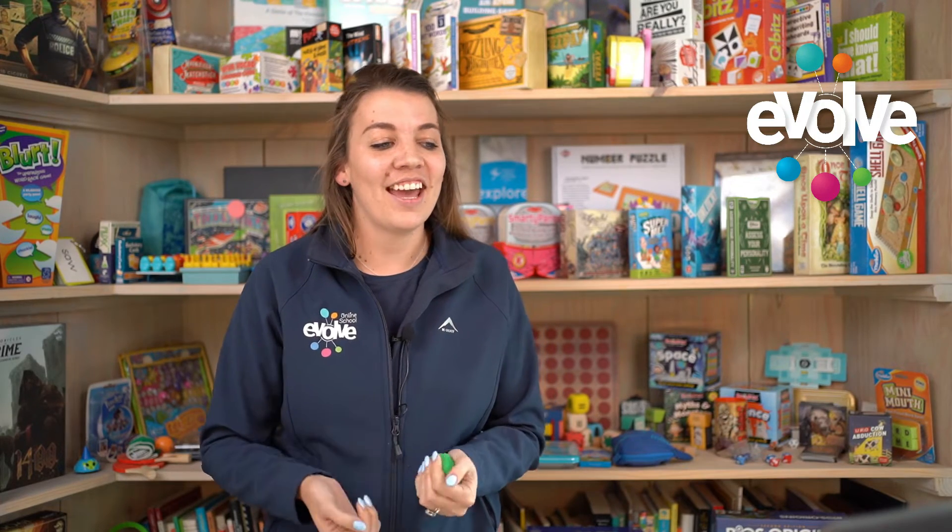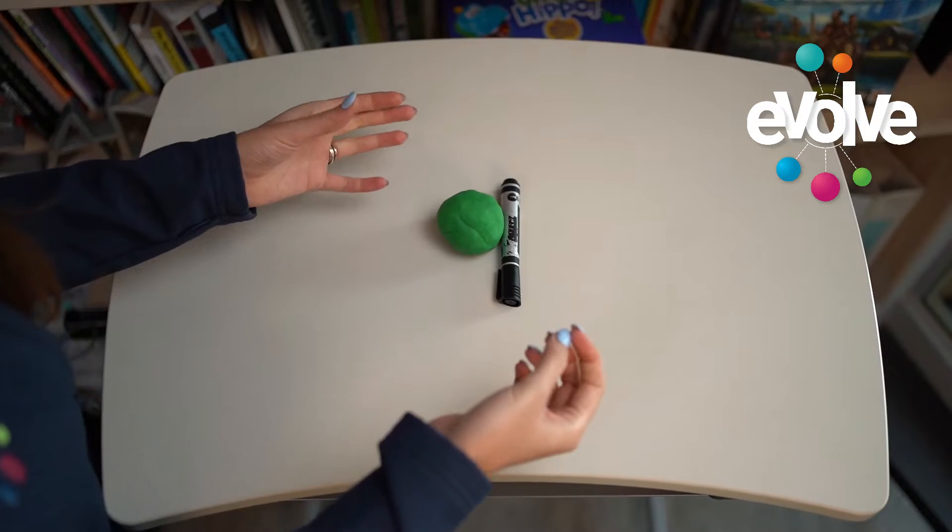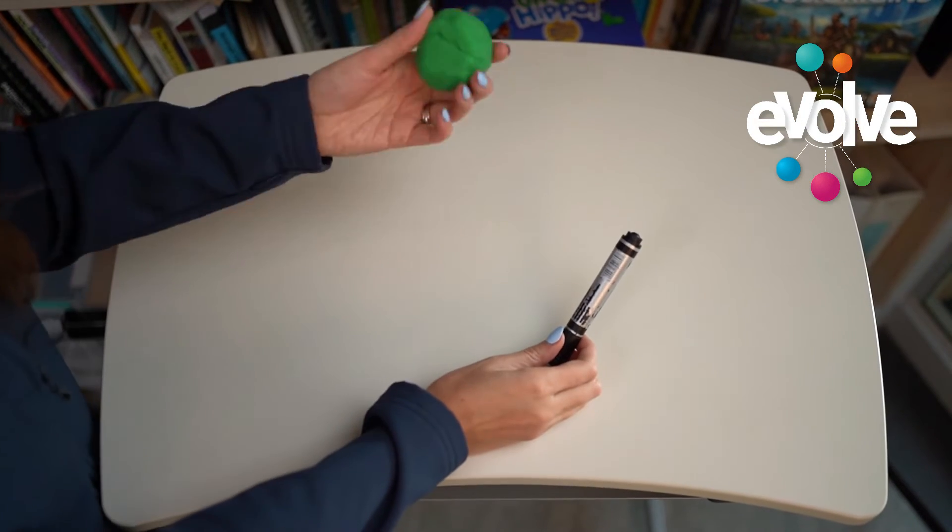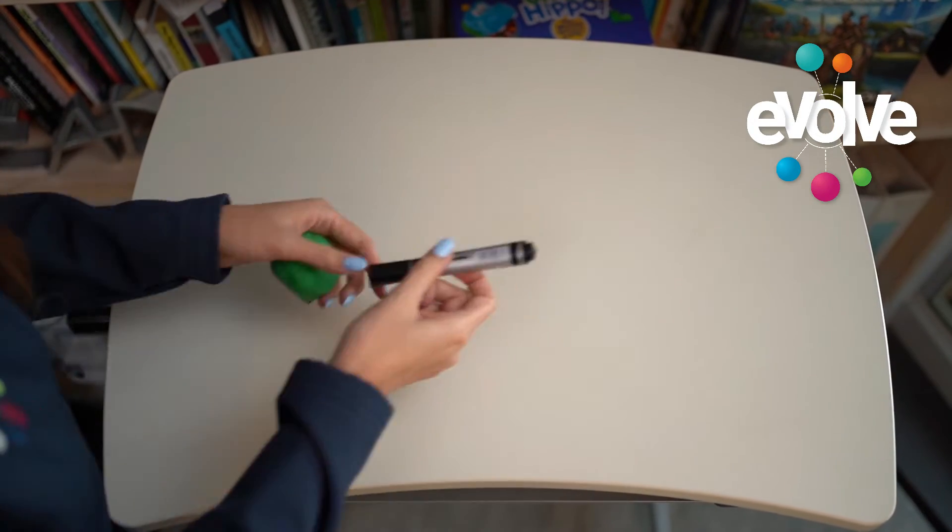Alright, so today's teaching hack is called Mushy Maths and what we do for Mushy Maths is we use play-doh as counters to keep our kinesthetic and visual learners engaged. What you're going to need for Mushy Maths is a ball of play-doh and a whiteboard marker.